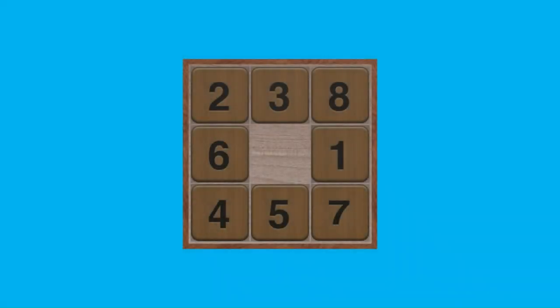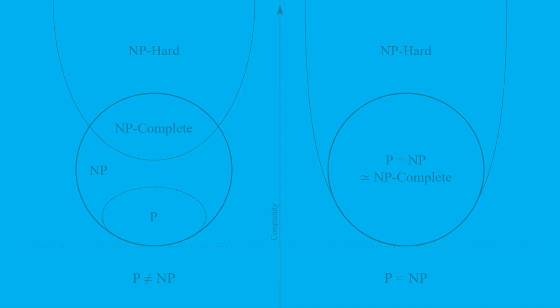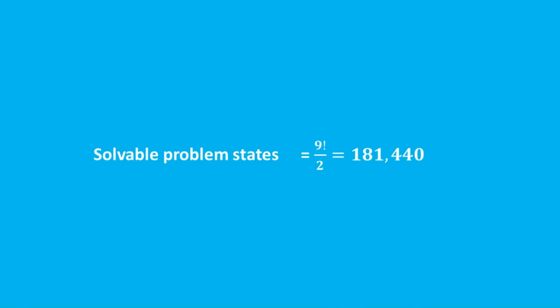The 8-puzzle represents the largest possible end-puzzle that can be completely solved. While it is straightforward, it presents a substantial problem space. Larger variants like the 15-puzzle exist but cannot be entirely solved. This complexity classifies the n-by-n extension of the 8-puzzle as an NP-hard problem. The 8-puzzle encompasses 9 factorial possible tile permutation states. Among these states, every second permutation is solvable, giving a total of 9 factorial divided by 2, which is 181,440 solvable problem states.